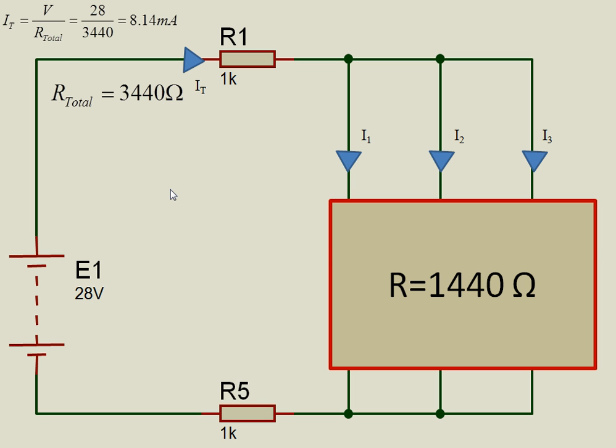So the total resistance is 3,440. From that I can get the total current. The total current is the total voltage divided by total resistance. It's 28 volts divided by 3,440 which gives me 8.14 milliamps. Because the total current flows through here and this is also 1 kilo ohm, then the current through here is also 8.14 milliamps.